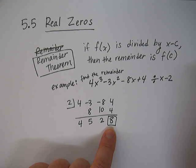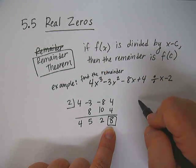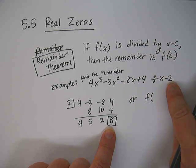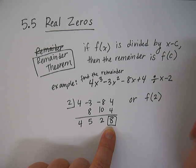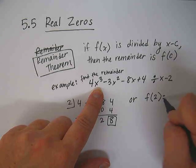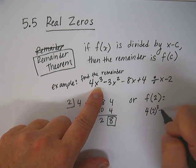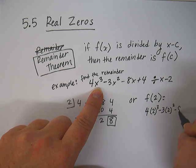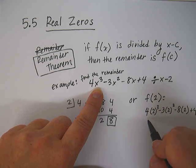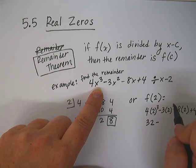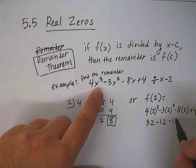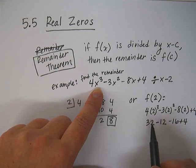So now what the remainder theorem is saying is that the remainder 8 should also be able to be found by taking f of x and finding the value of the function at 2. So instead of doing synthetic division, we take the 2 and we plug it into our function, which would be 4 times 2 cubed minus 3 times 2 squared minus 8 times 2 plus 4. So 2 cubed is 8, times 4 is 32. 2 squared is 4, times 3 is negative 12.